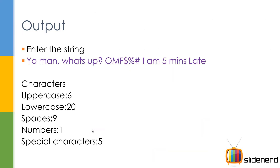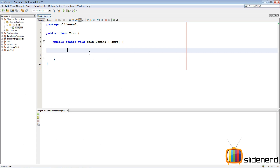Let me show you the output to make sure you're clear on it. Here we have the string 'yo man what's up blah blah blah'. The results are: uppercase letters - 6, lowercase - 20, spaces - 9, numbers - 1, special characters - 5. Special characters include dollar sign, percentage, hash, comma, and question mark.